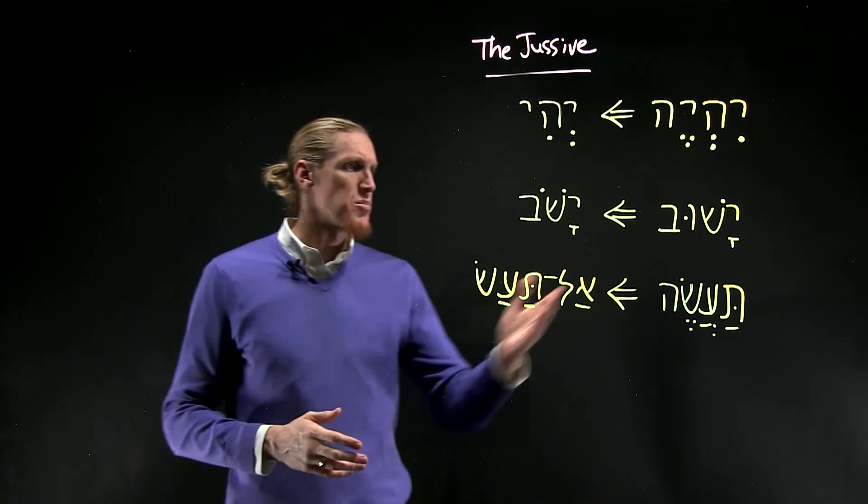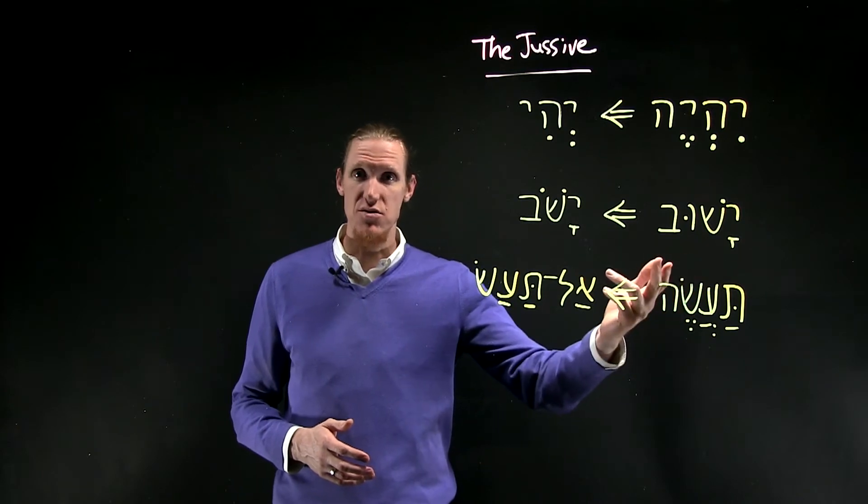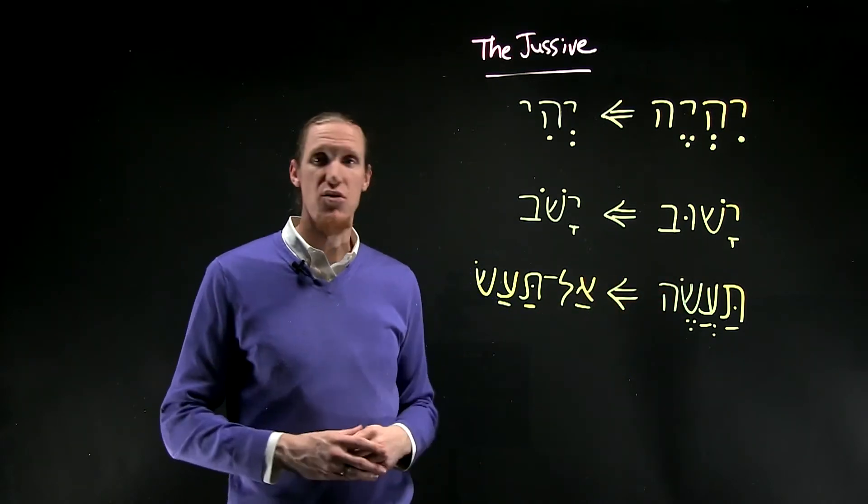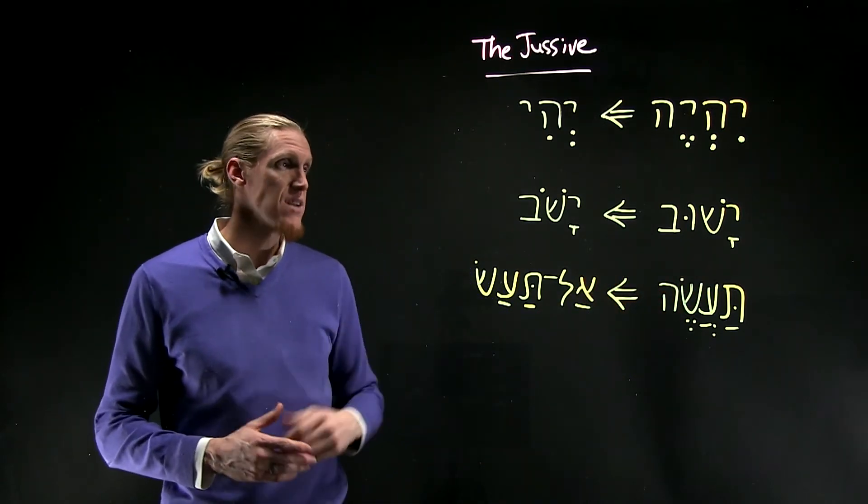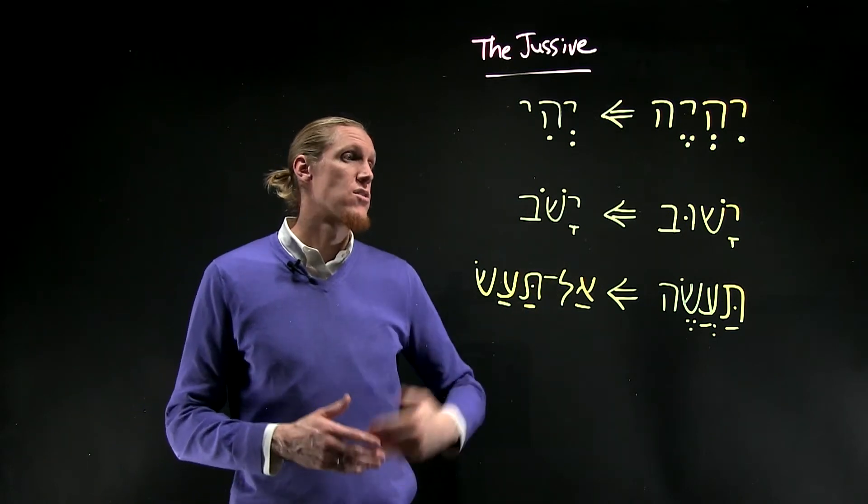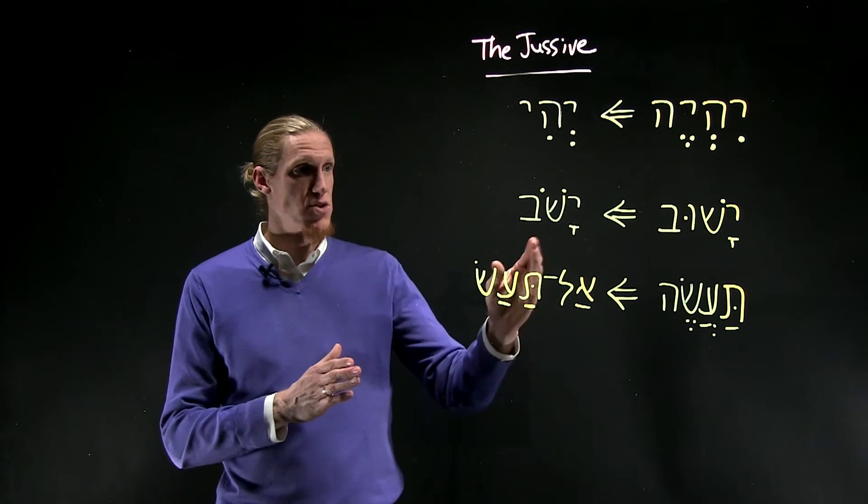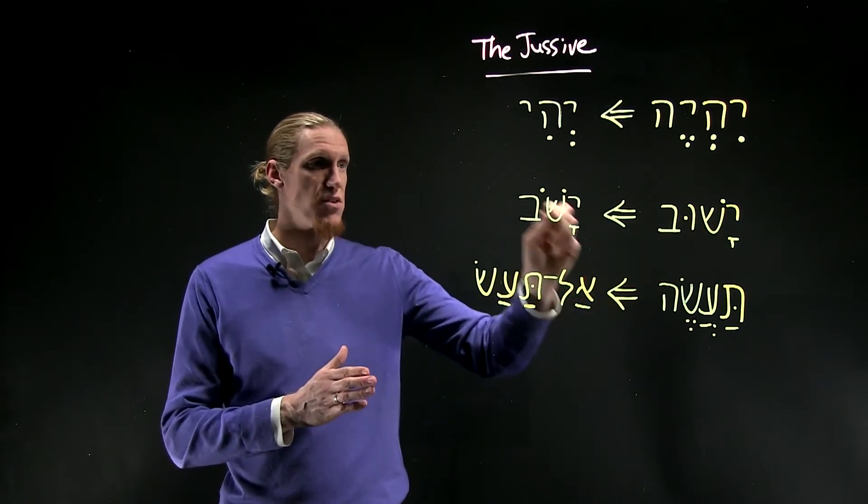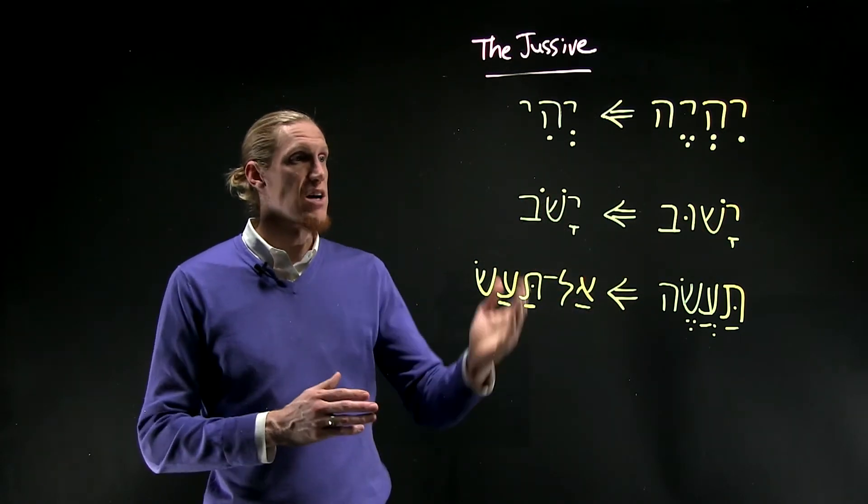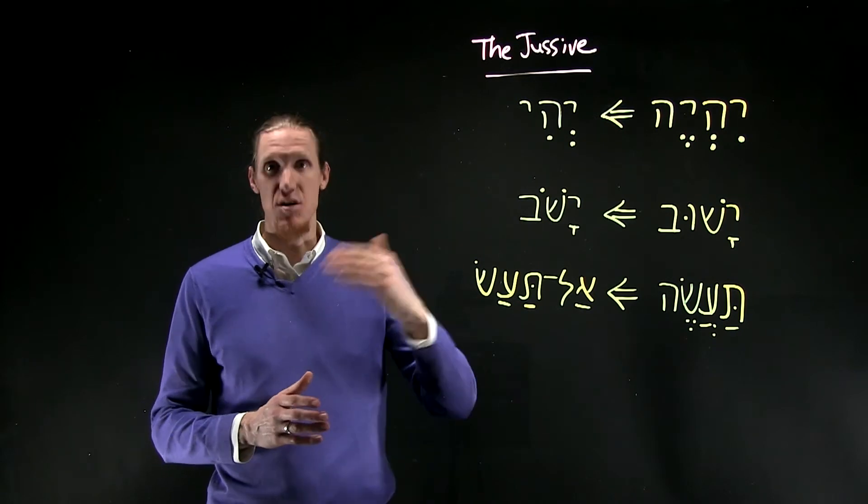Another example here is yashuv, the third masculine singular form from shin-vav-beit. He will return. The jussive form is a shortened form of that, the vav disappears and you just get the holom. Yashuv, let him return.